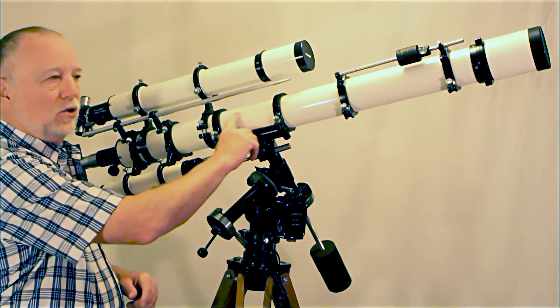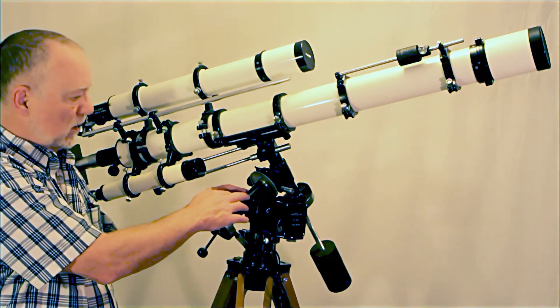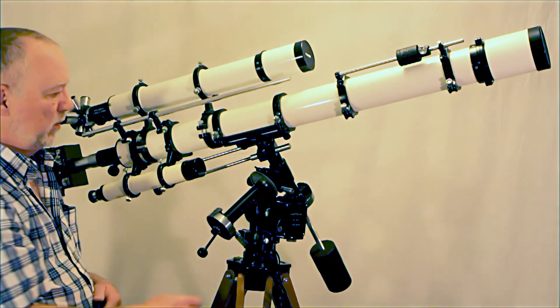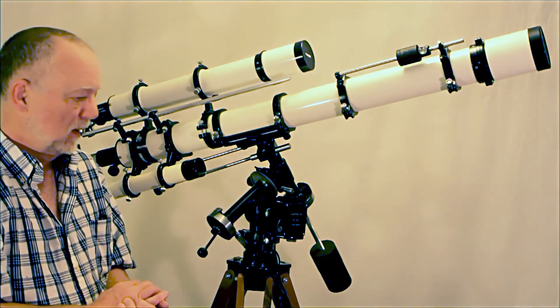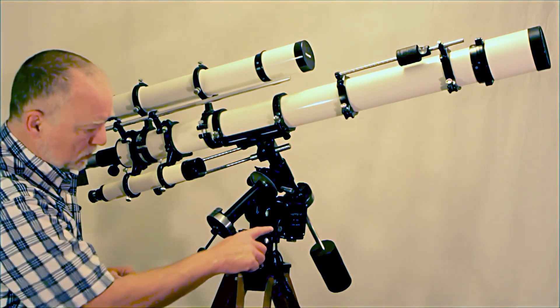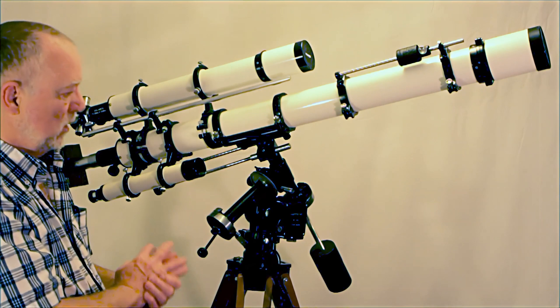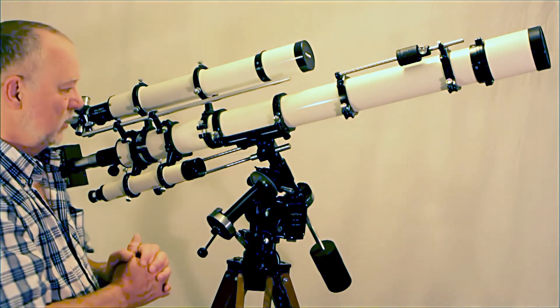First of all the standard Unitron 3-inch telescope with the equatorial mount that came as one piece. I was later able to come up with the clock drive for the scope and that was actually broken so I had to assemble that and fix it. It works fine now but it is a bit of a Frankenstein.